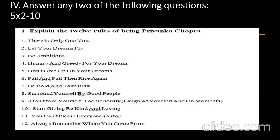Question 1: Explain the 12 rules of Priyanka Chopra. The 12 rules are: there is only one you; let your dreams fly; be ambitious, hungry, and greedy for your dreams; don't give up on your dreams; fail and fail, then rise again; be bold and take risk; surround yourself by good people; don't take yourself too seriously; start giving; be kind and loving; you can't please everyone, so stop; always remember where you come from. You need to explain each rule mentioned by Priyanka Chopra.